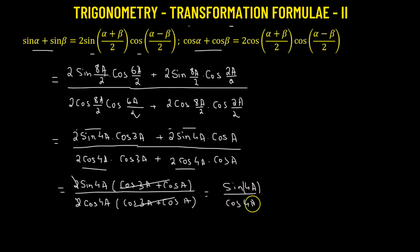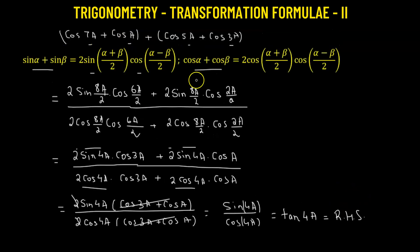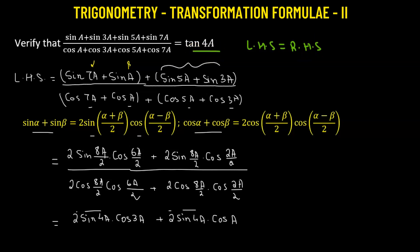Now here clearly both trigonometric functions — sine and cosine — have the same angle, 4a. And we know that the ratio of sine to cosine is the tangent function, so we get tangent of 4a. This is the expression on the right-hand side. Hence, we have successfully shown that the left-hand side of our problem equals the right-hand side with a value of tangent of 4a.